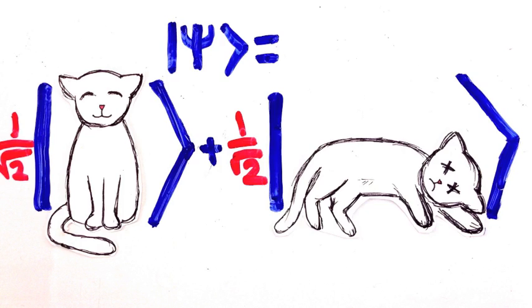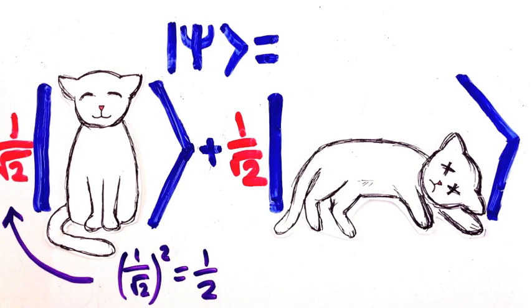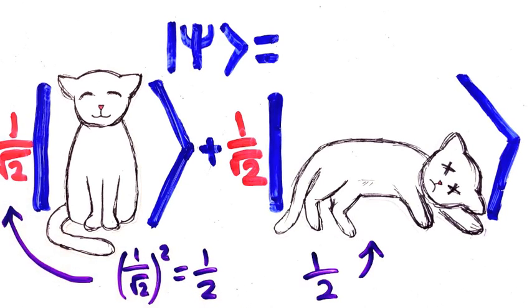So if I had a superposition like this, then the probability that the cat is alive is half and is dead is also half.